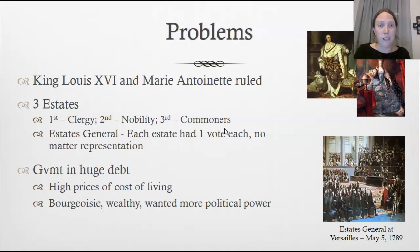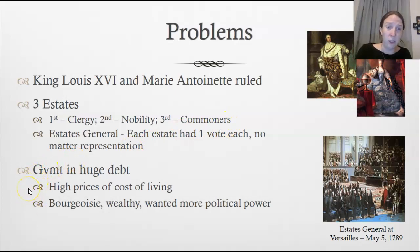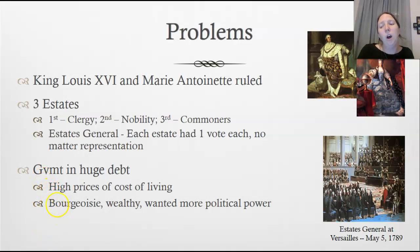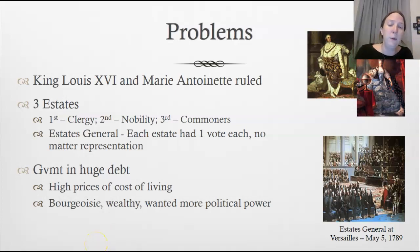Even though the third estate represented 98% of French people, their vote was held in the same esteem as the nobility and clergy. The nobility and clergy would often agree, so the commoners almost always lost when trying to pass a resolution. Meanwhile, France was in huge debt after supporting the American Revolution and wars with Britain, driving the cost of living up. The bourgeoisie wanted more political power.